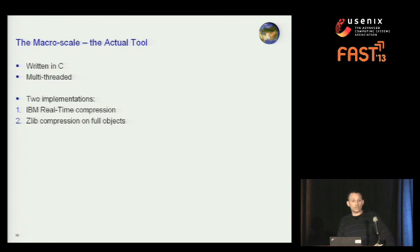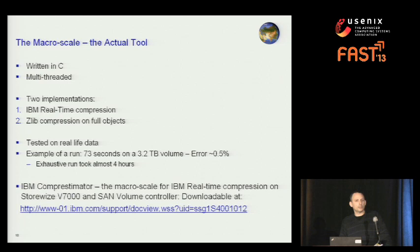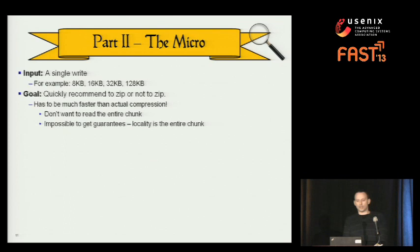We built an actual tool implementing this, written in C, multi-threaded, supporting two compression methods: IBM real-time compression (the original motivation) and Zlib on full objects. Tested on real data: on a 3.2-terabyte volume it ran in 73 seconds with less than half a percent error, while an exhaustive run took almost four hours. The tool is called IBM CompressEstimator — searchable online — and provides estimations for IBM real-time compression products.